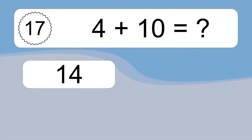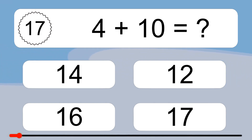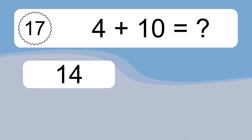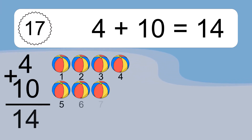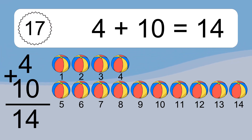4 plus 10 equals what? 4 plus 10 equals 14. Let's count it. 1, 2, 3, 4, 5, 6, 7, 8, 9, 10, 11, 12, 13, 14.